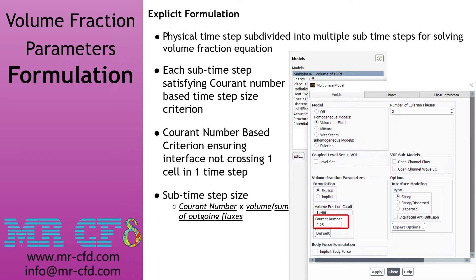When using the explicit method, the physical time step defined by the user will be subdivided into multiple sub-time steps to solve the volume fraction equation accurately. Each of these sub-time steps must satisfy the Courant number based time step size criterion to be deemed acceptable. By setting the Courant number to less than unity, it is ensured that the interface will not cross more than one cell in each time step, guaranteeing accuracy of results. The formula for sub-time step sizes and further information can be found in the Ansys Fluent online help.